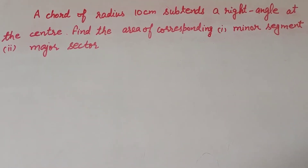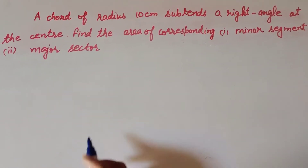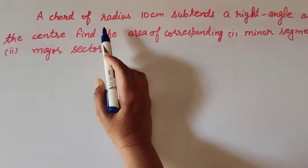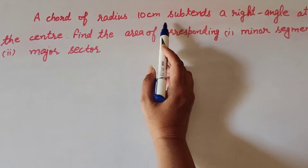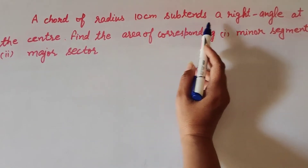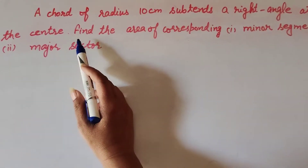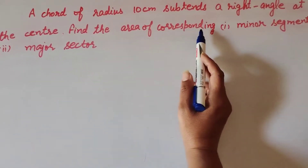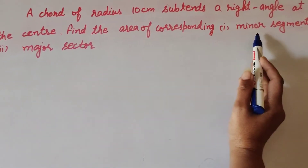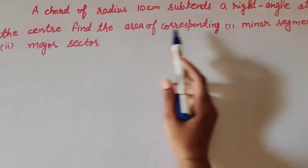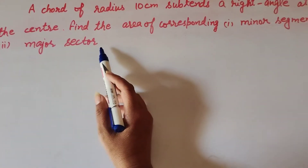Hello friends, welcome to my channel. In this video we discuss: a chord of radius 10cm subtends a right angle at the center. Find the area of the corresponding minor segment and major sector.